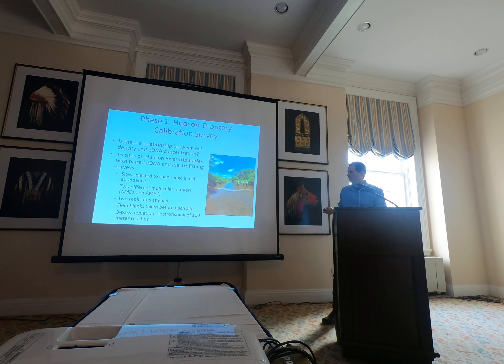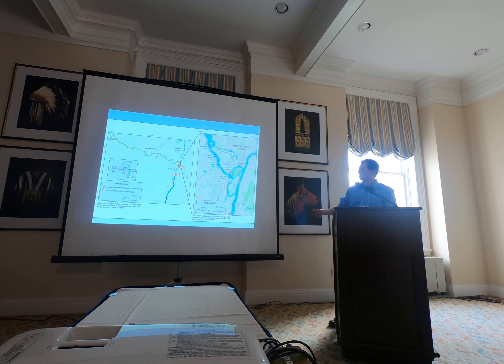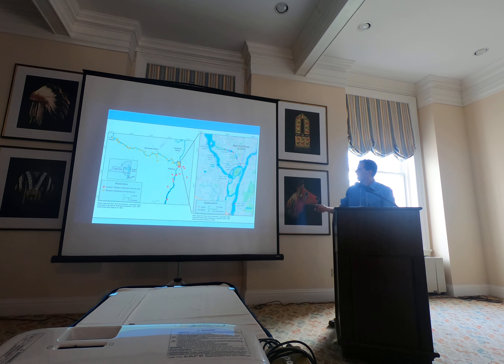Here's a quick snapshot of the 15 Hudson River tributaries we looked at. I'm not going to dwell on them since phase two is really what we want to talk about. On this figure, the red sites are the Hudson River tributary sites — two sites on the Sawkill, which is as far south as we went — and all the yellow sites are phase two, which we'll get into momentarily.